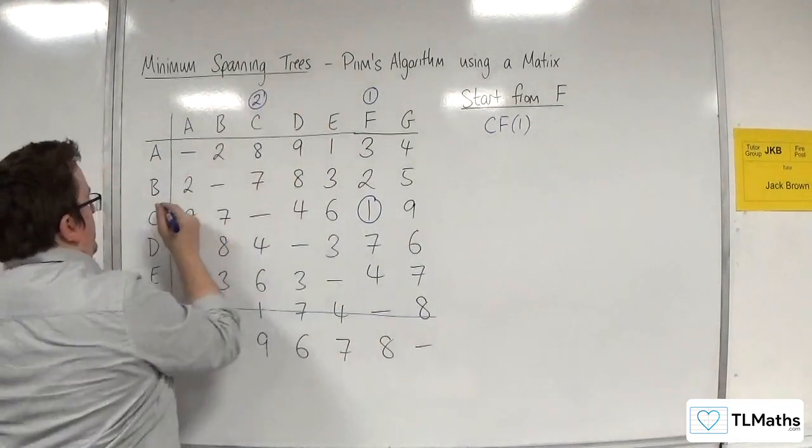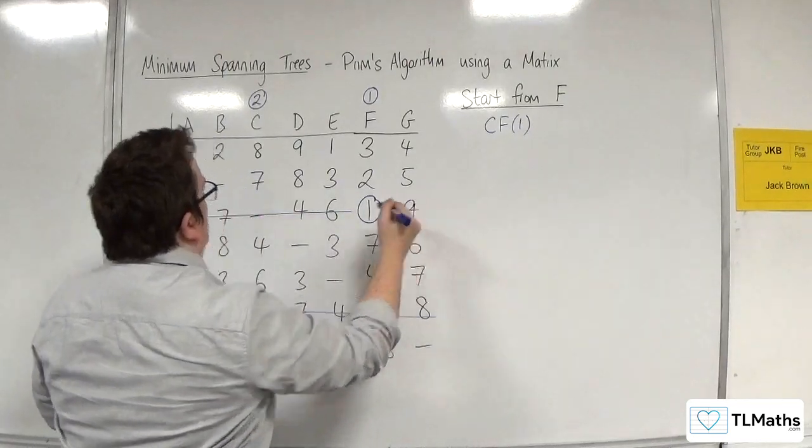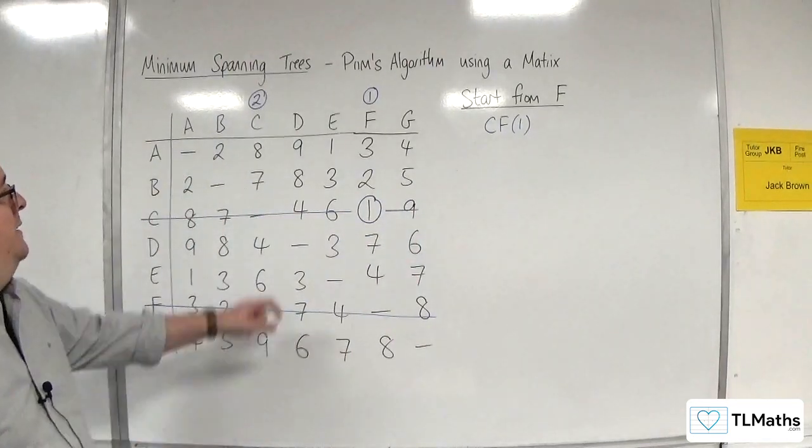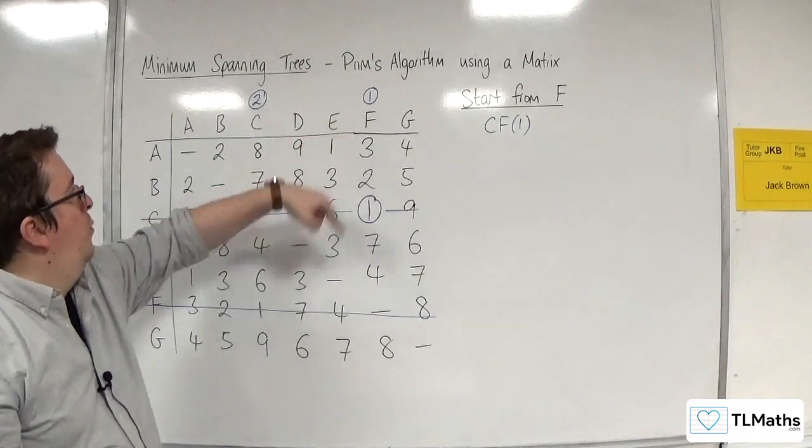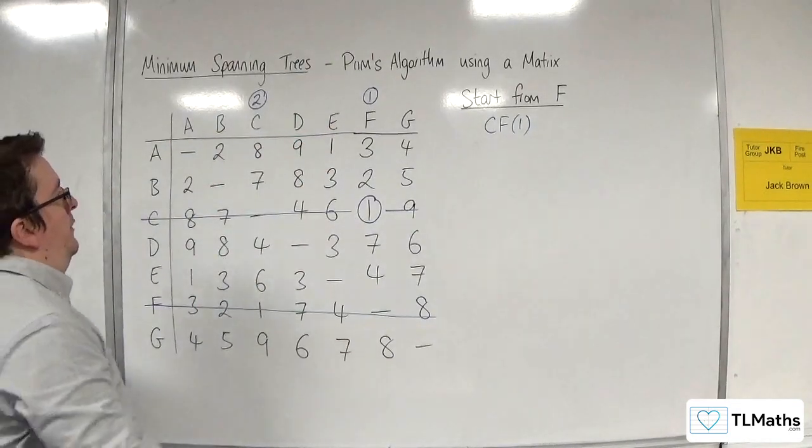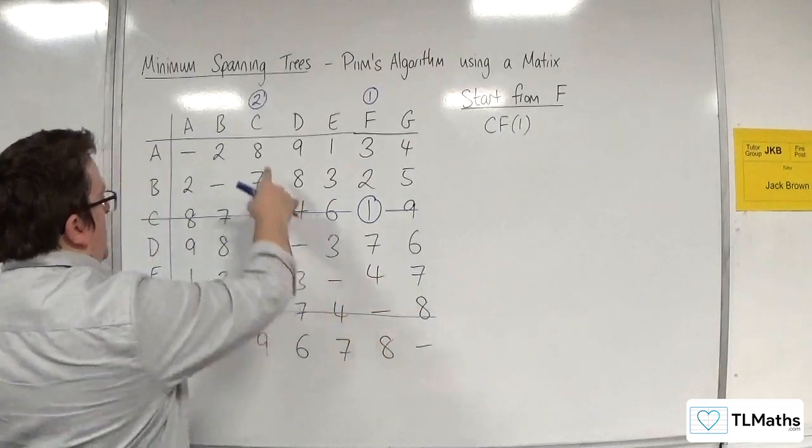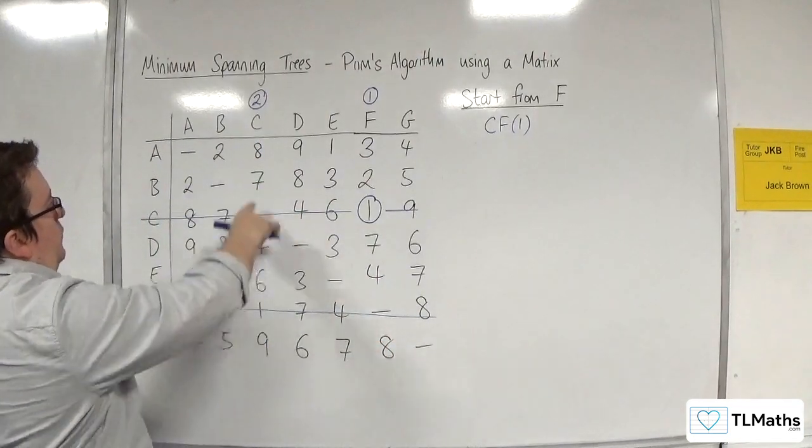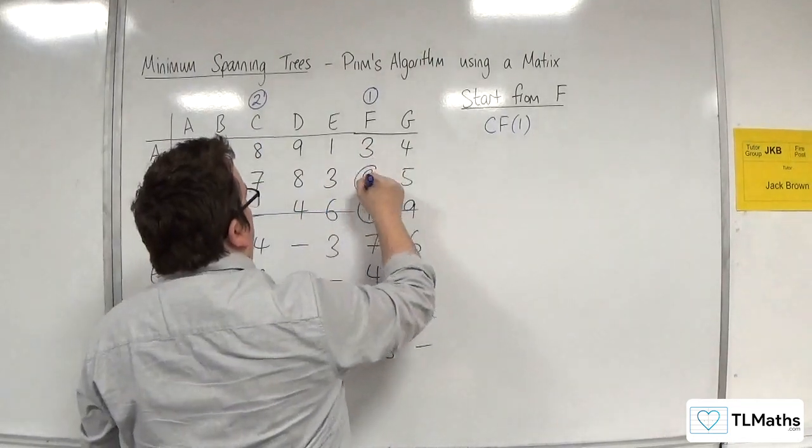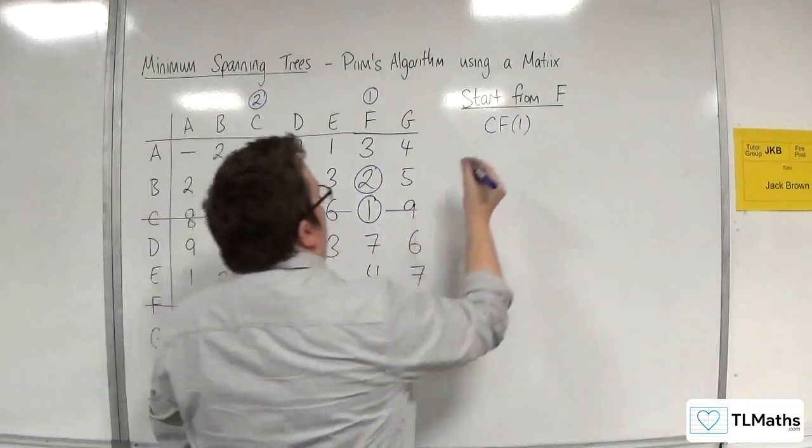C gets the number 2, and I delete the rest of the row. I'm now looking down column 1 and 2, so F and C, for the next shortest. Down here I've got 2, and down here I've got 4. 2 is best. B is now connected to F.